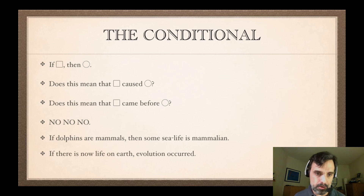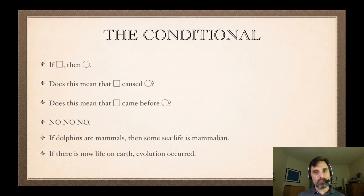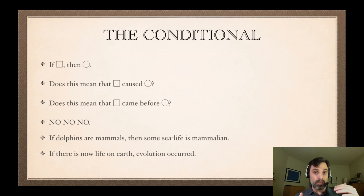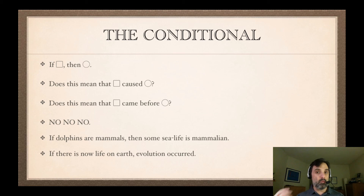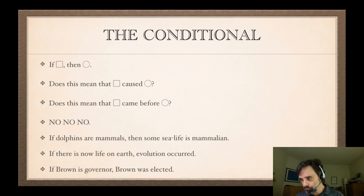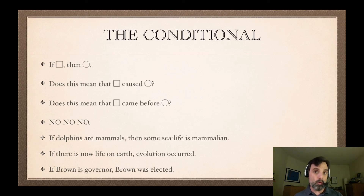How about 'if there is now life on earth, evolution occurred'? If this is true, then what makes the consequent true comes before what makes the antecedent true — we're saying if there's now life on earth, then earlier there was evolution. If there's any causal relationship, it's that the evolution caused there to now be life on earth. So in this case, what makes the consequent true both precedes and causes what makes the antecedent true. Similarly, 'if Brown is governor, Brown was elected' — first he was elected, and as a result he became governor. The consequent comes before the antecedent in time.